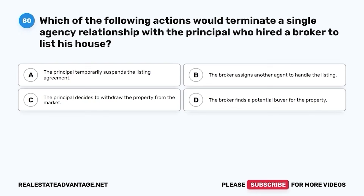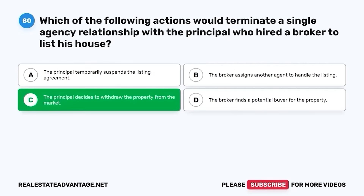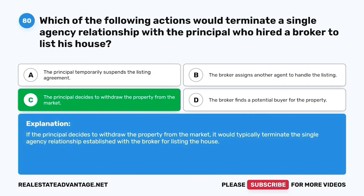Question 80. Which of the following actions would terminate a single agency relationship with the principal who hired a broker to list his house? A. The principal temporarily suspends the listing agreement. B. The broker assigns another agent to handle the listing. C. The principal decides to withdraw the property from the market. D. The broker finds a potential buyer for the property. The correct answer is C. The principal decides to withdraw the property from the market. If the principal decides to withdraw the property from the market, it would typically terminate the single agency relationship established with the broker for listing the house.